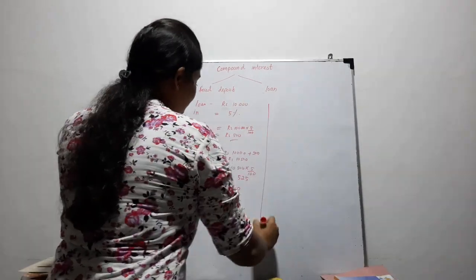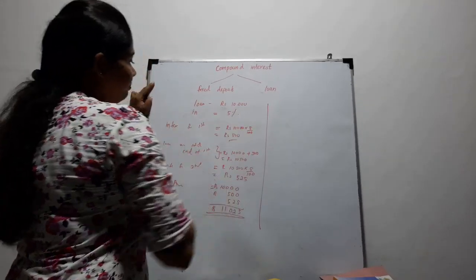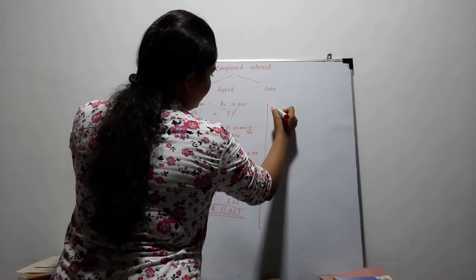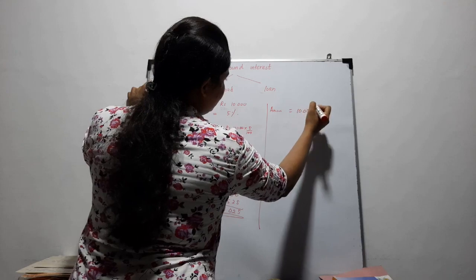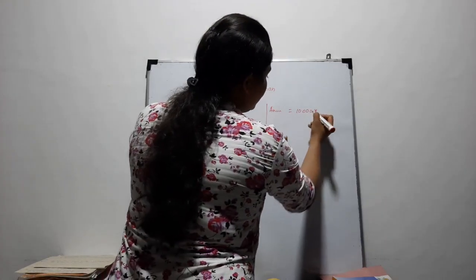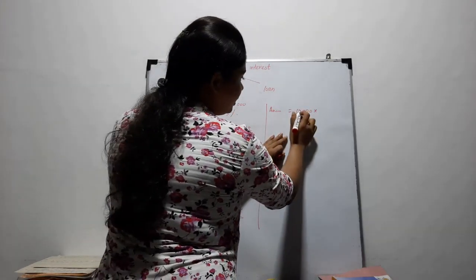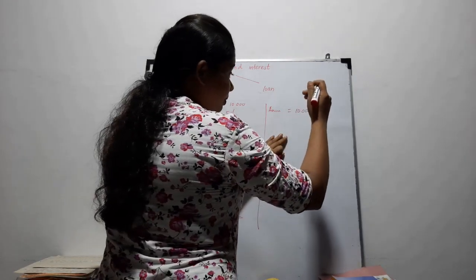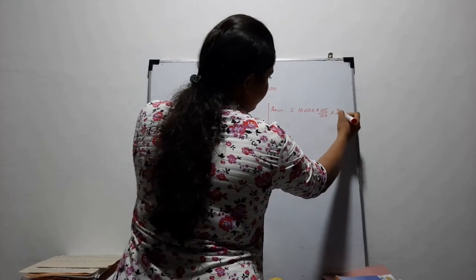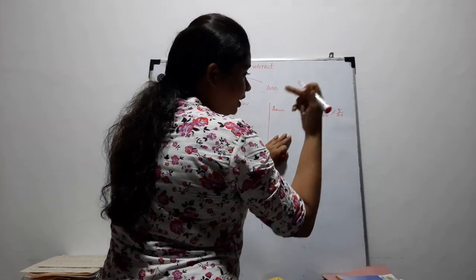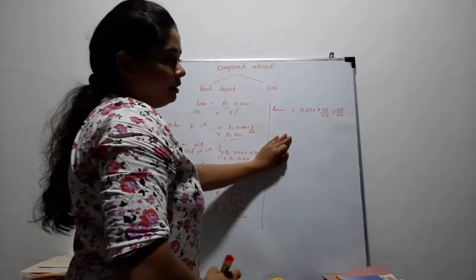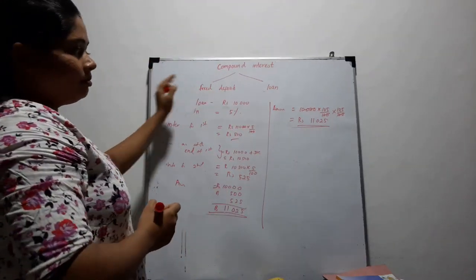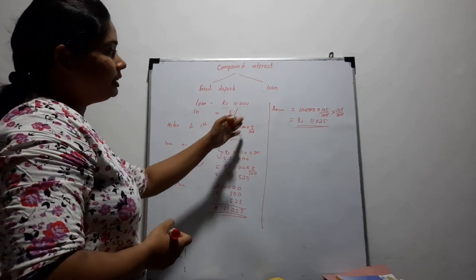Now let's see an easy method. The loan is 10,000 and the interest rate is 5%. We can directly calculate the amount needed to settle the loan. To find the loan amount at the end of the first year, we multiply 10,000 by 105 over 100. Then to calculate the amount needed to settle, we again multiply by 105 over 100. After simplifying, we obtain the answer: 11,025 rupees. Both answers are the same, so we can use either method to solve problems.